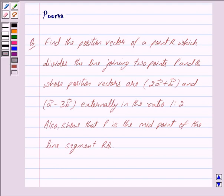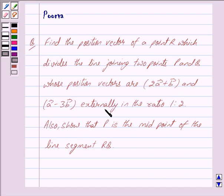Hi friends, I am Purva and today we will work out the following question. Find the position vector of a point R which divides the line joining two points P and Q, whose position vectors are 2 times vector A plus vector B, and vector A minus 3 times vector B, externally in the ratio 1 is to 2. Also show that P is the midpoint of the line segment RQ. Let us begin with the solution now.